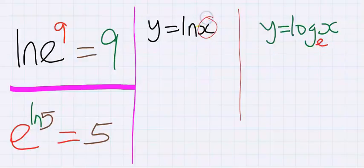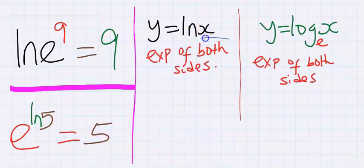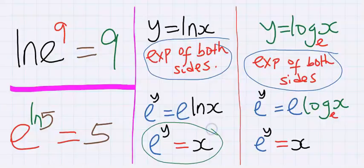In order to free up x, we need to take the exponential of both sides. And when we take the exponential of both sides, x is now free.